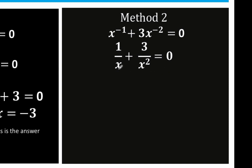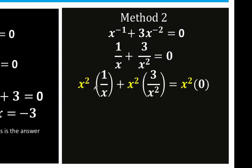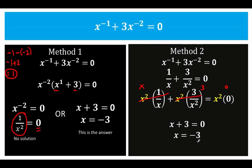To solve this rational equation, we find the LCD, which is x squared, and multiply each term by that LCD. So 1 over x multiplied by x squared gives x. And 3 over x squared multiplied by x squared gives 3. The right side is 0 times x squared, which is 0. So we arrive at x plus 3 equals 0. Solving for x, we get x equals negative 3, which agrees with our answer from method number 1.